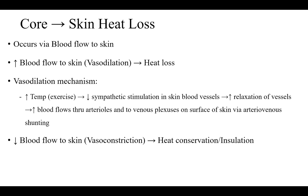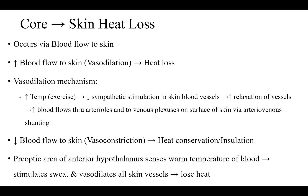Anytime you have decreased blood flow to the skin, that is called vasoconstriction, and that helps in heat conservation. The pre-optic area of the anterior hypothalamus is the thermostat of the body. This area senses warm temperature of blood, and that stimulates sweating and vasodilates all skin vessels to lose heat.